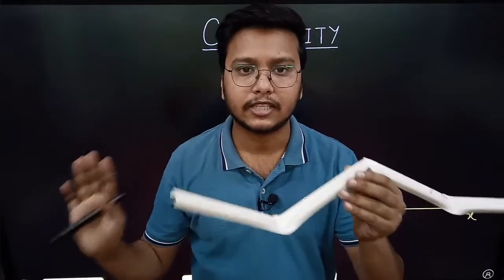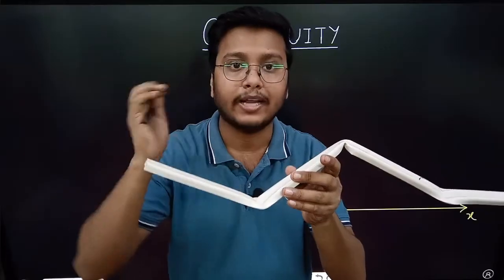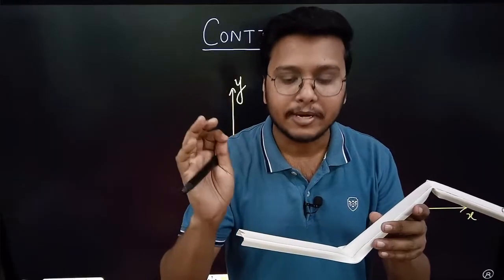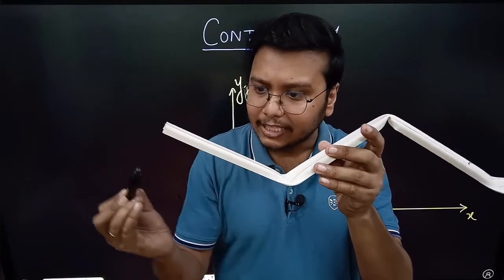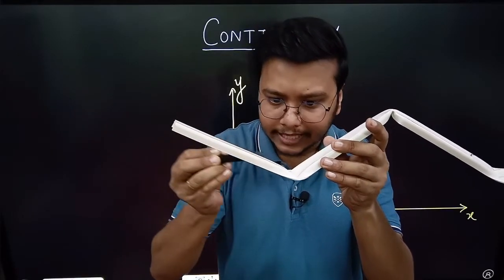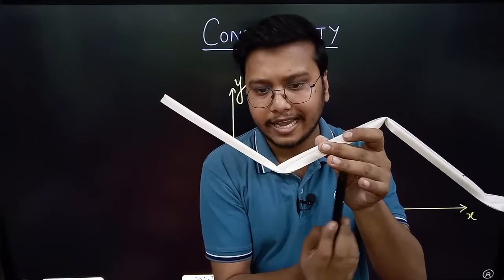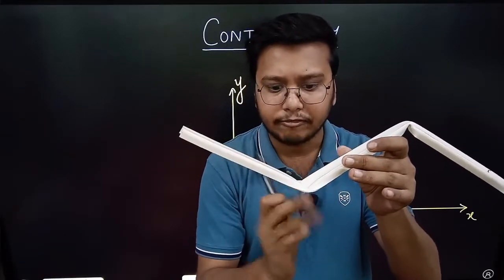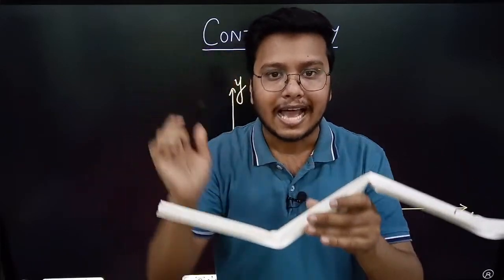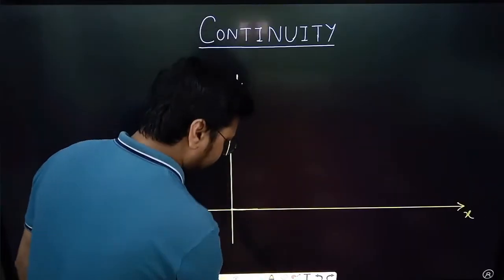Every time I approach this vertex point — either from the right or from the left — if I end up at the same place every time, then the function is called continuous at that point. This concept of approaching is given by the limit. If this point is 'a', then x tending to a from the right and x tending to a from the left — if each time I reach this vertex and my answer turns out to be the same, then we say the function is continuous.